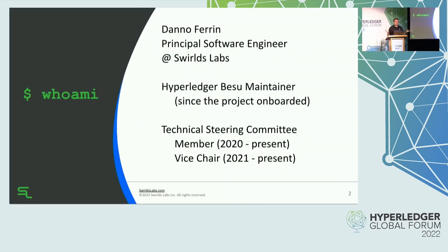My name is Dan O'Farrin. I'm a principal software engineer at Swirls Labs, a company that works for the Hedera network. I'm one of the maintainers for the Hyperledger Besu project and I've been with Hyperledger Besu since it was onboarded into the Hyperledger ecosystem — it started as a project at ConsenSys called Pantheon. I'm also a member of the technical steering committee, having served two terms, and this term I've been serving as vice chair underneath Tracy Couric, who's been doing a great job leading the TSC.